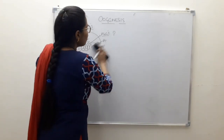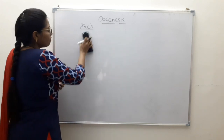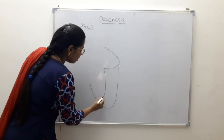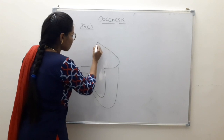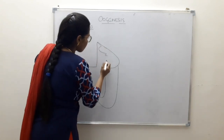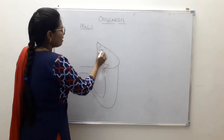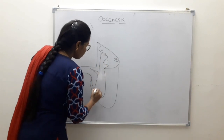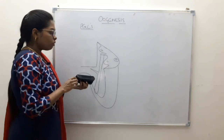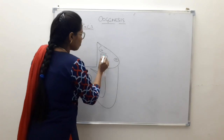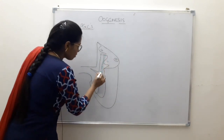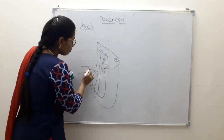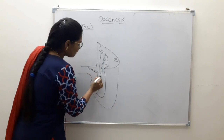We will now see how the primordial germ cells reach the developing gonad. The gonad is on the posterior abdominal wall, and the gut is suspended from it by the dorsal mesentery. Around the fourth week of development, the primordial germ cells start their journey and reach the gonad by the fifth week.